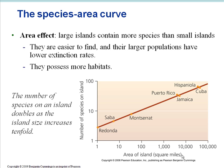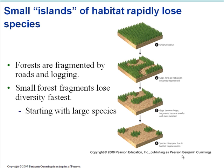Take a look at the figure there on the bottom for selected islands. Small islands of habitat rapidly lose species. Habitat fragmentation by roads, logging, agriculture, and urban development occurs when a large contiguous area of habitat is reduced in area and divided into smaller, more scattered, and isolated patches, or habitat islands. This fragmentation is a major threat to the long-term survival of many species.